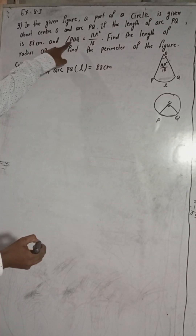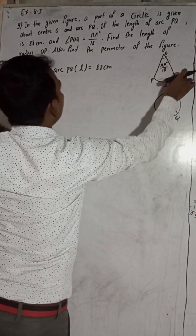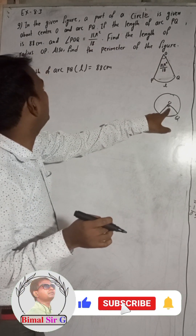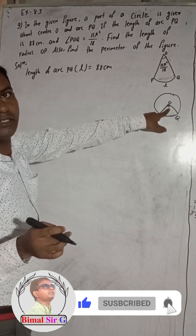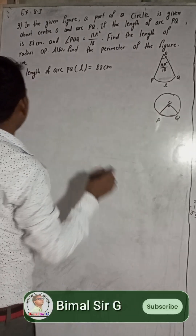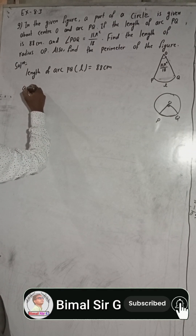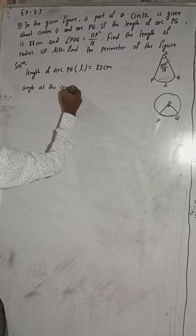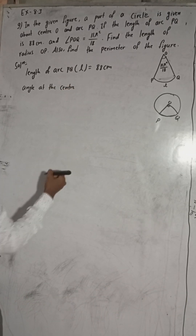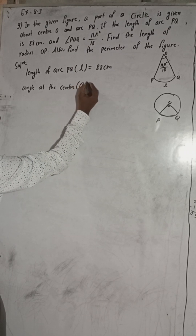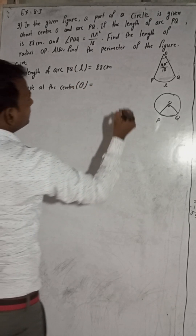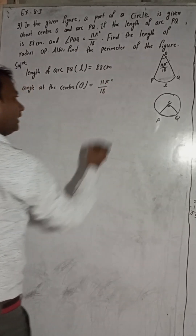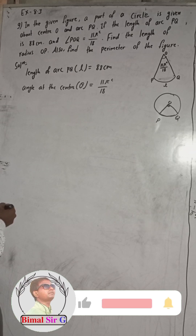The length of arc RPQ is 88 cm, so here what is given: length of arc RPQ, L is equal to 88 cm. And angle POQ is equal to 11π/18 radians, so this angle is equal to 11π/18 radians. That means this is the angle at the center, therefore we denote the angle at the center as theta. Theta is equal to 11π/18 radians.